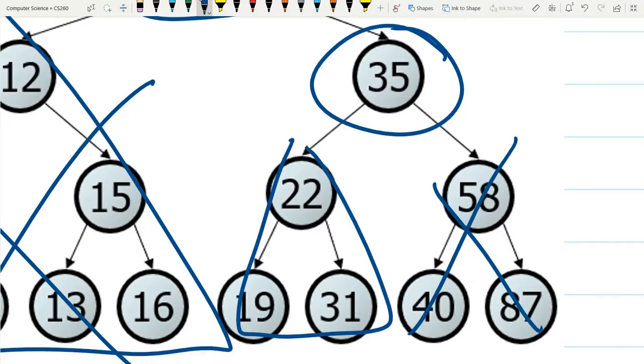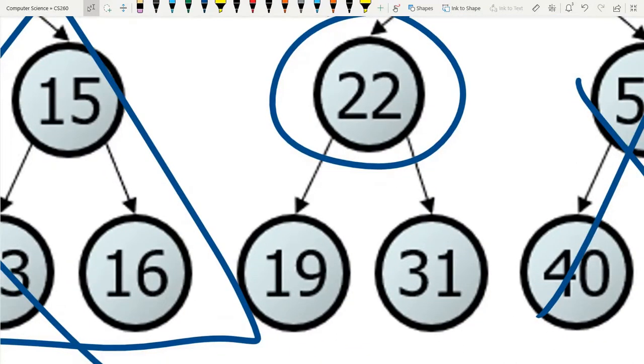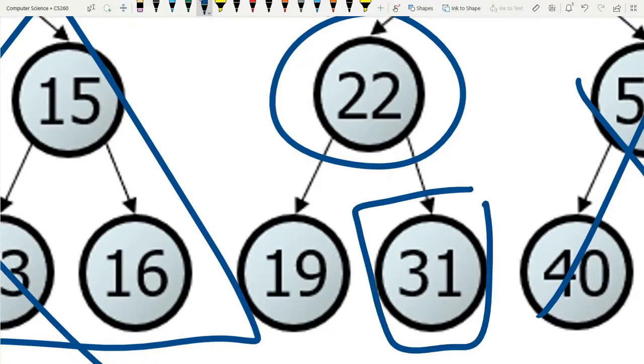So we can immediately throw away everything on the right, and we go down to the left. And from here, I want to find 31. It has to be greater than 22, so it would be on the right. So right there.